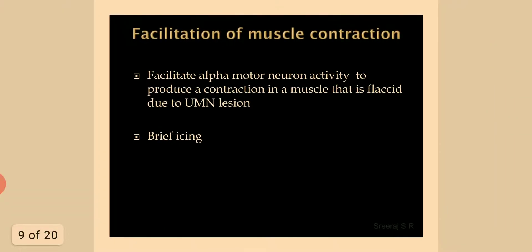Facilitation of muscle contraction: Brief icing facilitates alpha motor neuron activity to produce a contraction in a muscle that is flaccid due to an upper motor neuron lesion.